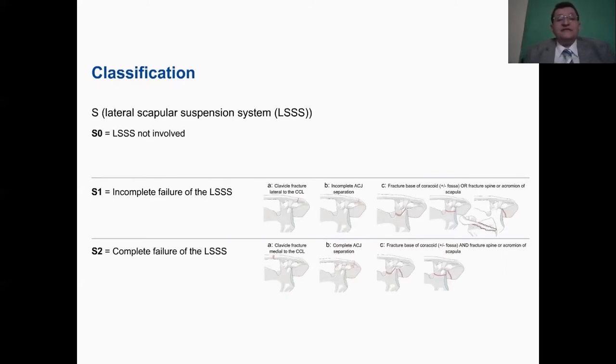The lateral scapular suspension system is symboled by S. In S0, there is no involvement of the system. While in S1, there is an incomplete failure, which means one break, which might be a fracture of the clavicle lateral to the coracoclavicular ligaments, or an AC joint incomplete separation, or a fracture of the base of the coracoid, or a fracture of the spine, or acromion of the scapula.